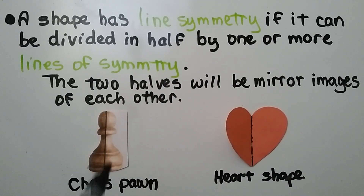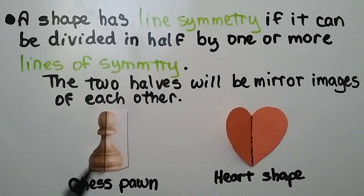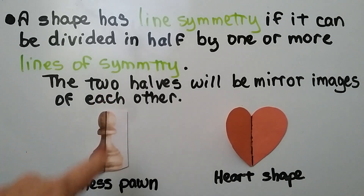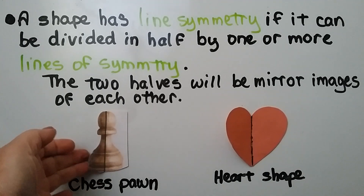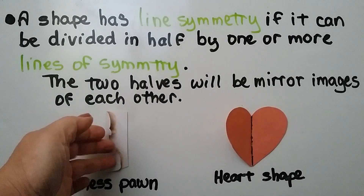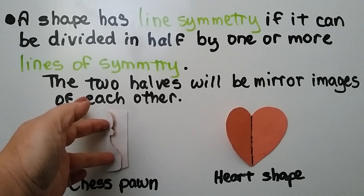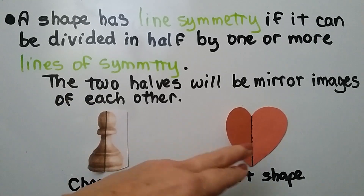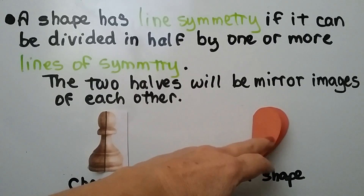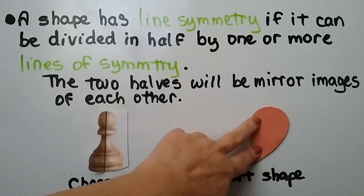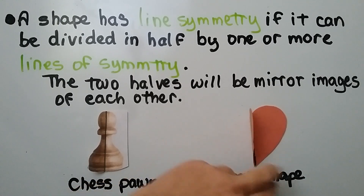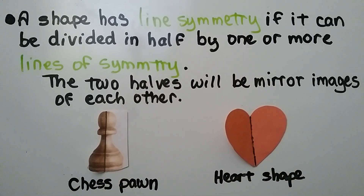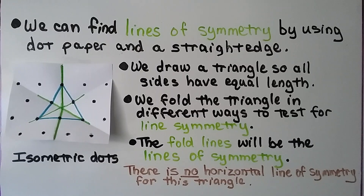The two halves will be mirror images of each other. This chess pawn has a vertical line of symmetry, and if I fold it on that line of symmetry it makes a perfect match. And with this heart, if I fold it on that vertical line of symmetry, it also makes a perfect match.